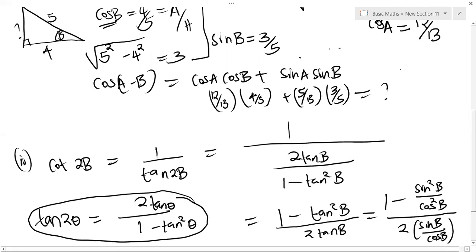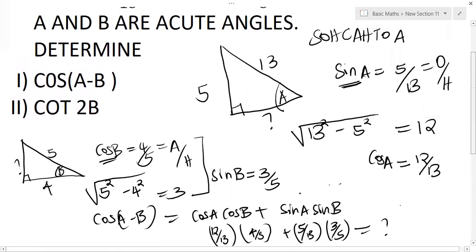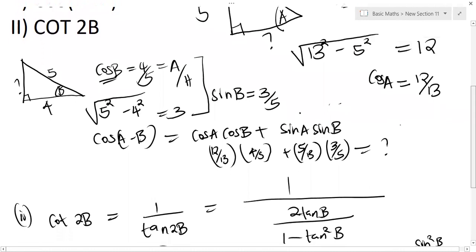Now we already have what sine B and cos B is. Sine B is 3 over 5 and cos B is 4 over 5.